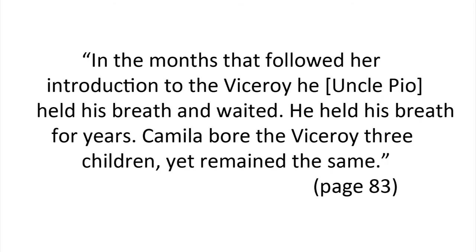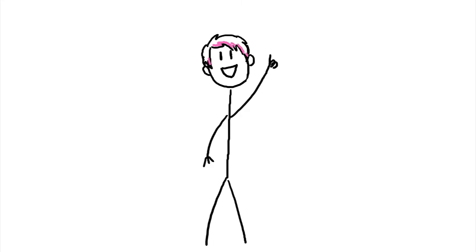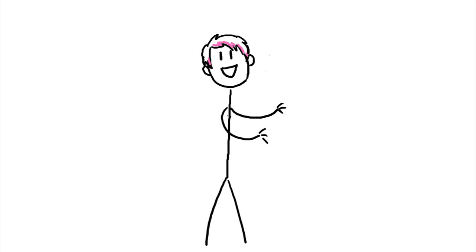Uncle Pio held his breath and waited. He held his breath for years. Camilla bore the Viceroy three children, yet remained the same. On pages 41–42, Esteban and Manuel go from being infants to young men. And pages 70–72 cover Uncle Pio's young life and how he came to Peru. There are also a few more quotes, but I'll let you look those up.